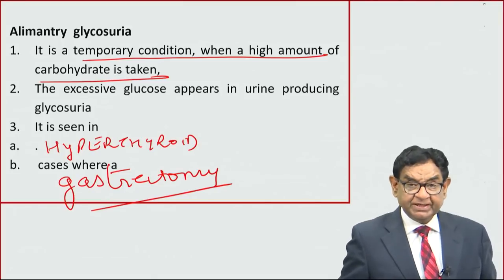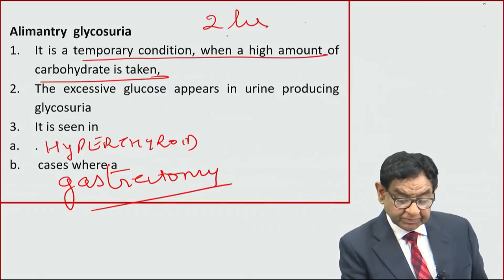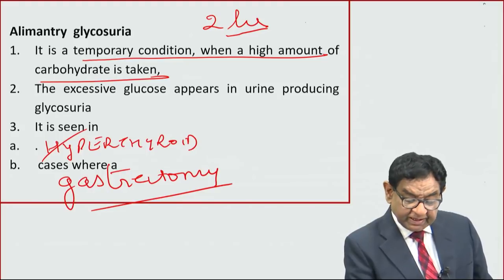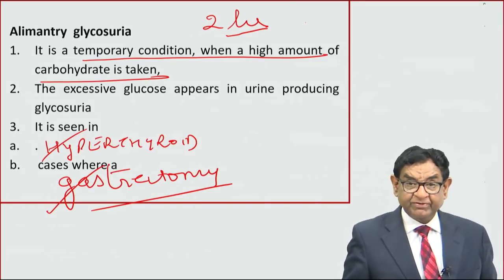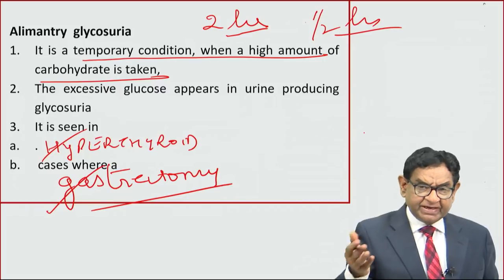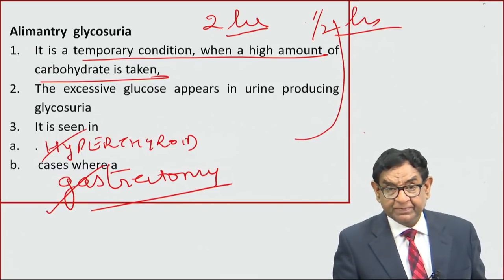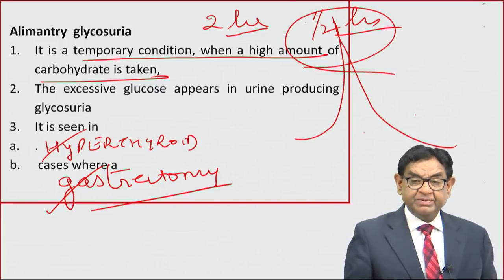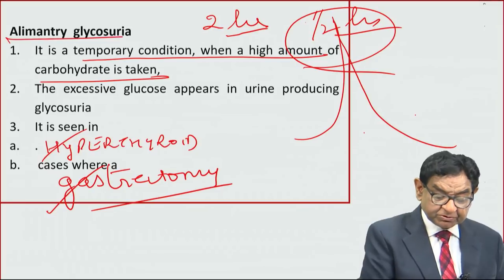The basic concept: normal gastric emptying time is two hours. In hyperthyroidism and after gastrectomy, due to rapid GI motility or loss of stomach reservoir, food reaches the small intestine very fast — perhaps in half an hour. It is rapidly digested and absorbed, causing a transient peak of high blood sugar that quickly returns to normal. During this transient hyperglycemia, the patient may have a little glycosuria — this is alimentary glycosuria.